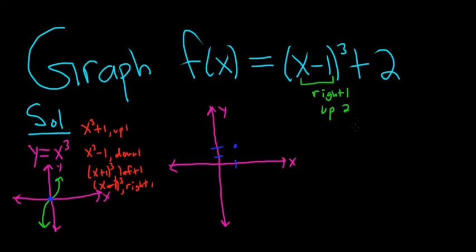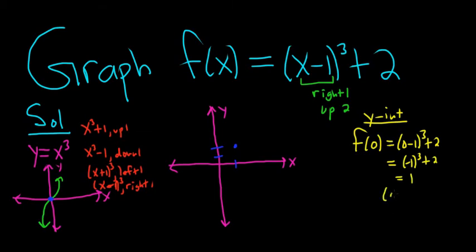So to find the y-intercept, that one's pretty easy. We just plug in 0 for x, always, no matter what. So f of 0 is equal to parentheses 0 minus 1 cubed plus 2. So this is equal to minus 1 cubed plus 2. So when you have minus 1 cubed, you get minus 1. So minus 1 plus 2 is just 1. That's just 1. So the y-intercept is 0 comma 1. That's the y-intercept.